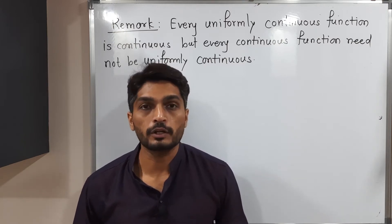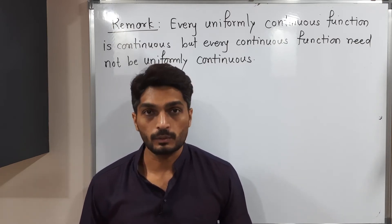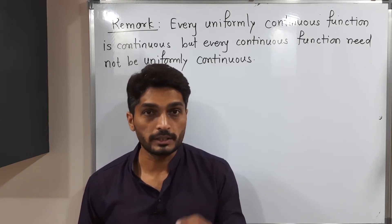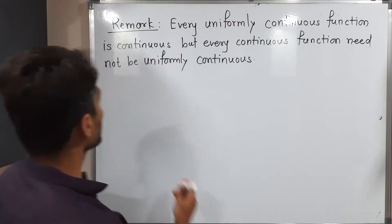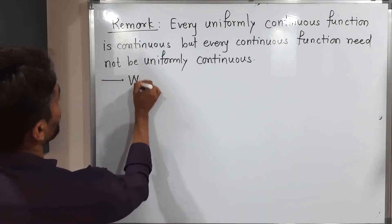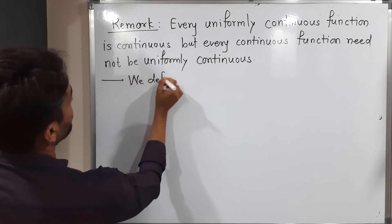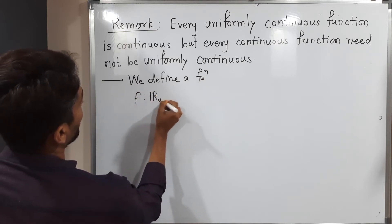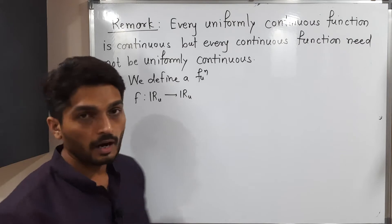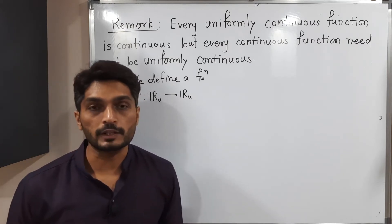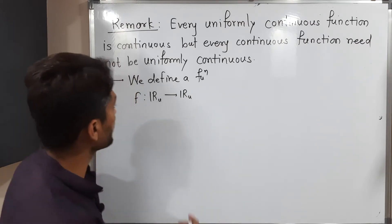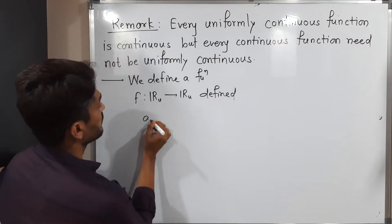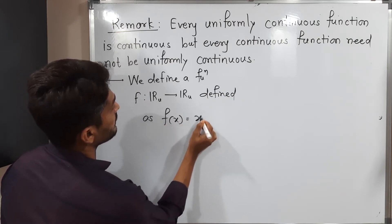The definition of uniform continuity we have already discussed in previous videos. So let us discuss the example which is continuous but not uniformly continuous. We define a function f from ℝ (with usual metric d(x,y) = |x − y|) to ℝ, defined as f(x) = x².